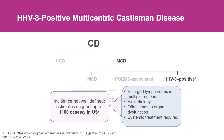There's another form called multicentric Castleman disease. These patients have multiple regions of enlarged lymph nodes, tend to have a severe systemic inflammatory response, and what we often call a cytokine storm.